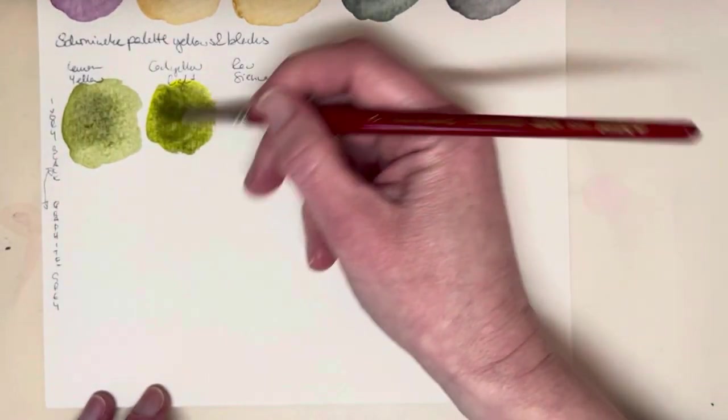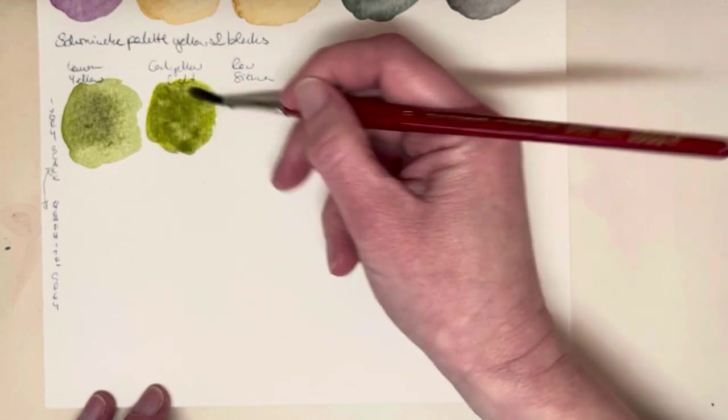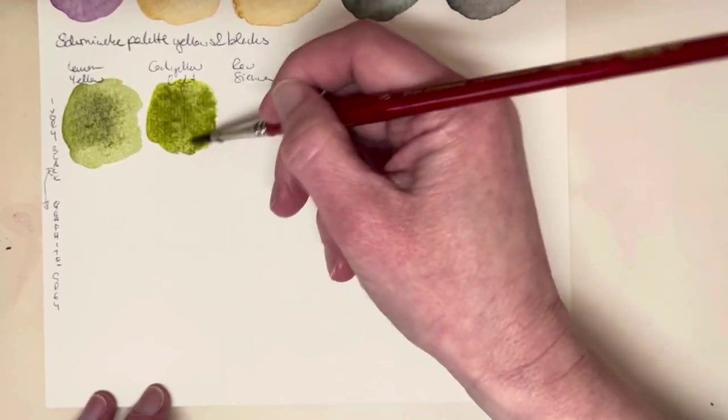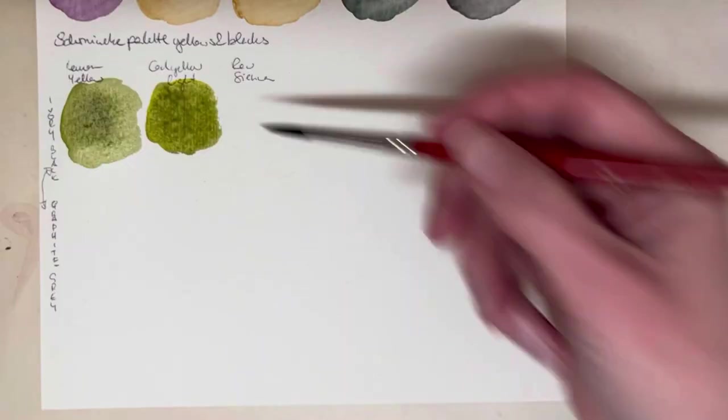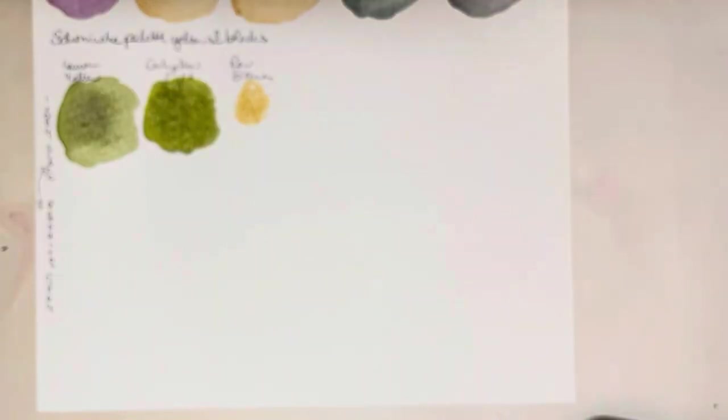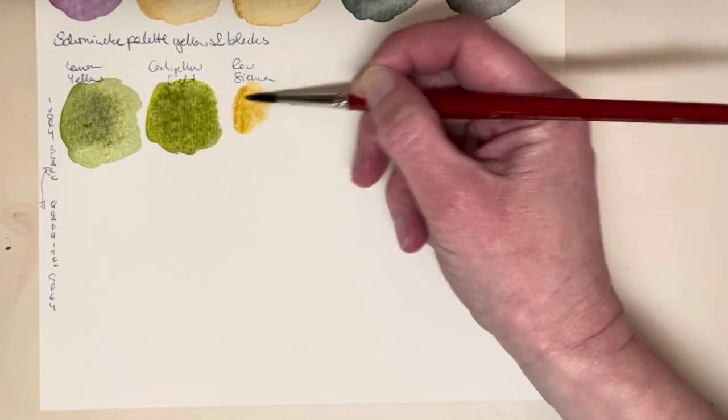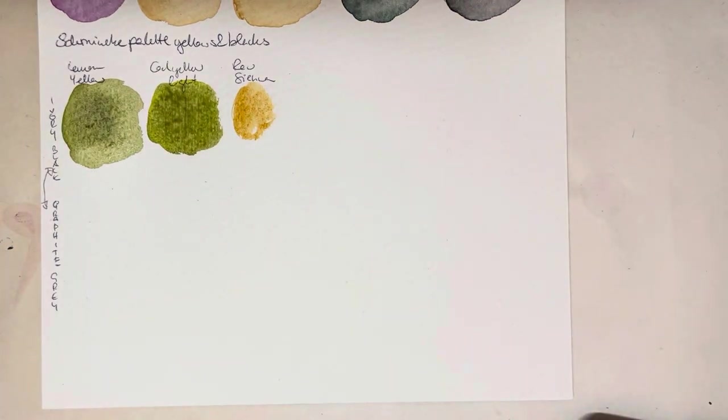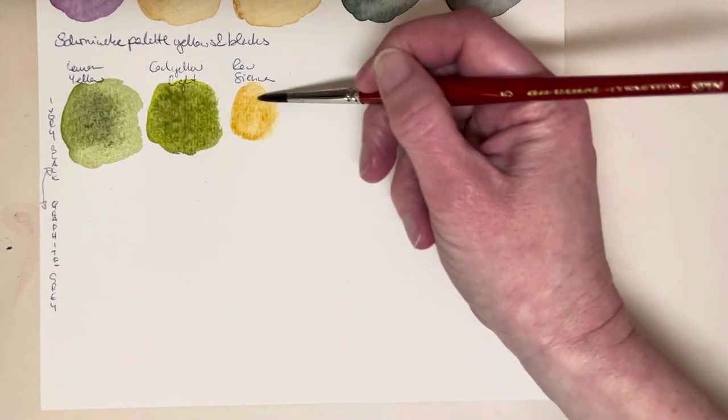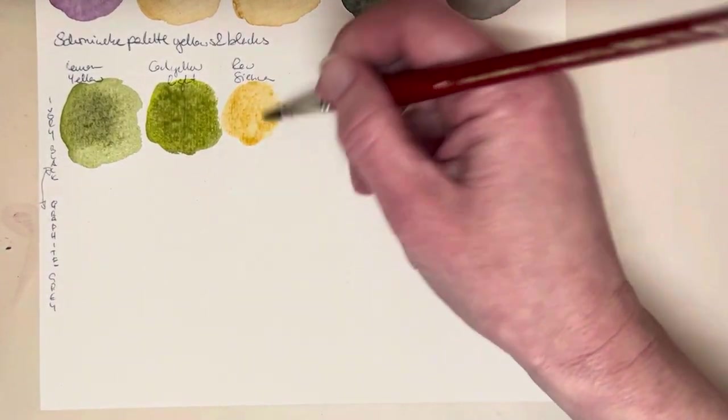That's what happens when you don't have a swatch card. I haven't made myself a swatch card yet for that palette. And then finally the raw sienna - I'm not sure how well this is going to work because usually it's the cooler yellows that mix greens with blacks, but we'll give it a try anyway.